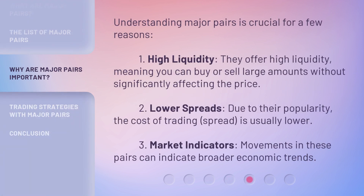Understanding major pairs is crucial for a few reasons. One: high liquidity — they offer high liquidity, meaning you can buy or sell large amounts without significantly affecting the price. Two: lower spreads — due to their popularity, the cost of trading (spread) is usually lower. Three: market indicators — movements in these pairs can indicate broader economic trends.